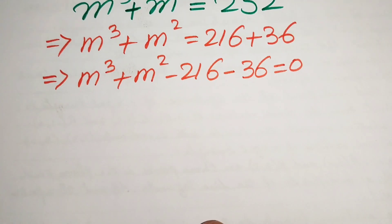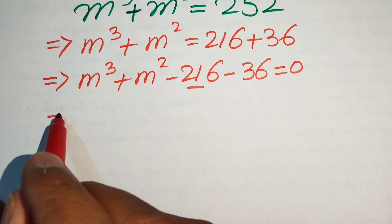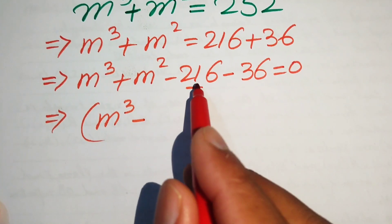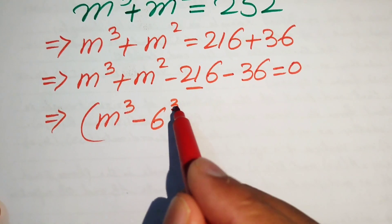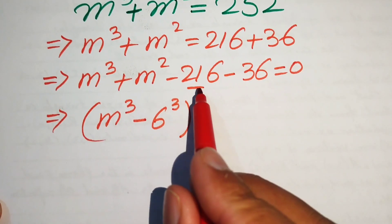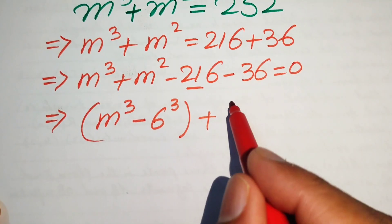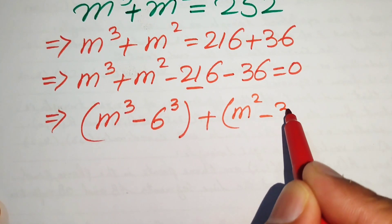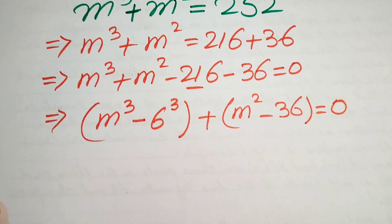We pair m³ with 216, writing m³ − 216 as m³ − 6³ since 6³ = 216, and we pair m² with −36, writing m² − 36 = 0.